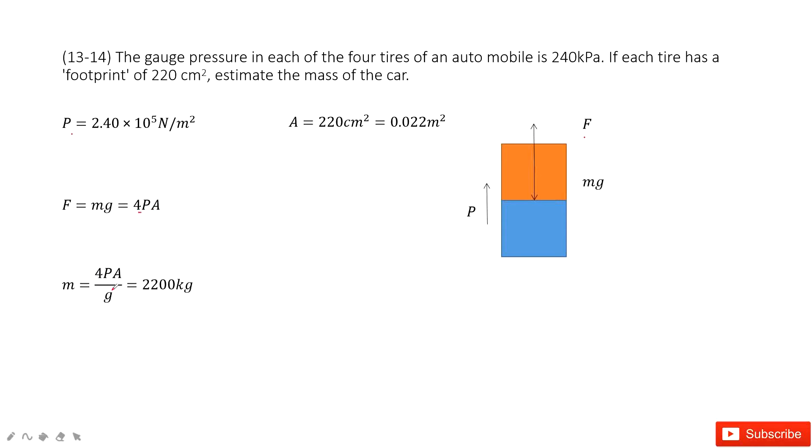Now we can convert this equation to get the function for mass is 4PA divided by g. You can see P is given, A is given, so we can get the final answer there. Thank you.